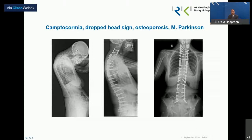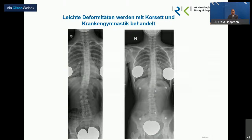Was ist eine Skoliose im weitesten Sinne? Das kann man hier ganz gut sehen in diesem klinischen Beispiel. Man kann die starke Seitausbiegung, die starke Verkrümmung des Rückens in der Vorbeugung und den begleitenden Rippenbuckel erkennen. Das ist eine Rotationskomponente – die Wirbel gehen nicht nur zur Seite weg, sondern sie verdrehen sich auch und nehmen die anhängigen Rippen mit. Das führt zu dieser teilweise massiven Deformität auch des Brustkorbes.